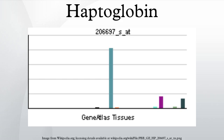Haptoglobin is the protein that in humans is encoded by the HP gene. In blood plasma, haptoglobin binds free hemoglobin released from erythrocytes with high affinity and thereby inhibits its oxidative activity. The haptoglobin-hemoglobin complex will then be removed by the reticuloendothelial system.